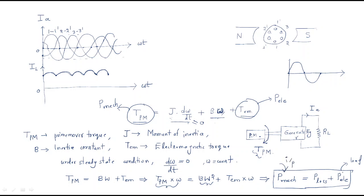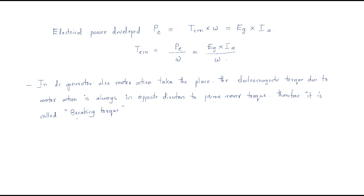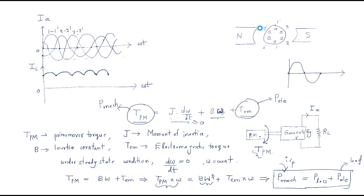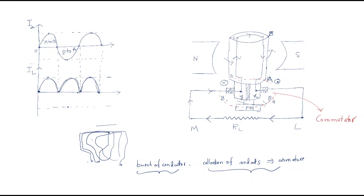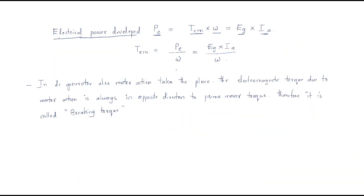We will analyze the equation for electrical power developed. The electrical power P_E is nothing but electromagnetic torque times speed. We can also name it as generated EMF E_G times armature current I_A. Across the armature it generates some EMF E_G and some current, which is the armature current. So electromagnetic power P_E equals electromagnetic torque times speed, which equals generated EMF times armature current.